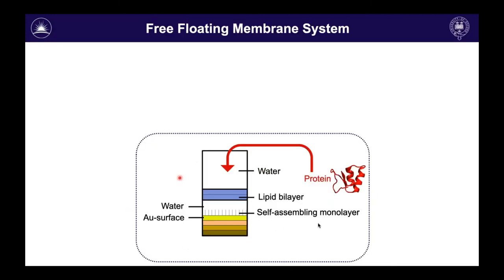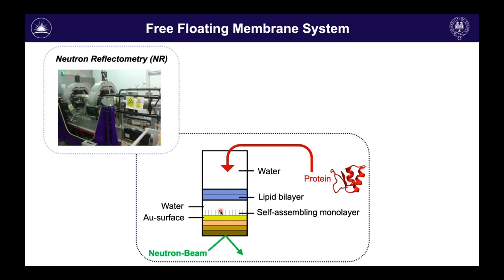Here is how my experimental system looks: you have a surface, on top of that surface a gold layer, and on top of the gold layer a self-assembling monolayer (SAM). You then add lipids in the form of vesicles, and via a procedure we developed, you gain a lipid bilayer. Crucially, the lipid bilayer and the self-assembling monolayer are not in contact — there's a water layer in between, so the lipid bilayer is essentially free-floating. That's why I call this a free-floating membrane system. You can then add protein and measure everything with neutrons.